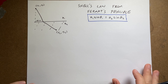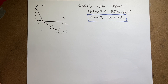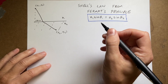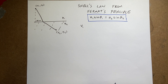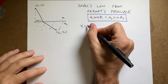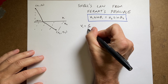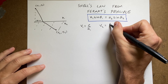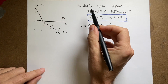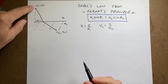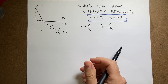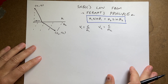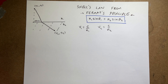The light is going to come down here and bend. The apparent speed of light in medium 1 is v1, which equals the speed of light divided by n1, where n1 is the index of refraction. And v2 equals the speed of light divided by n2. Fermat's principle says the path light takes is the path of minimum time.